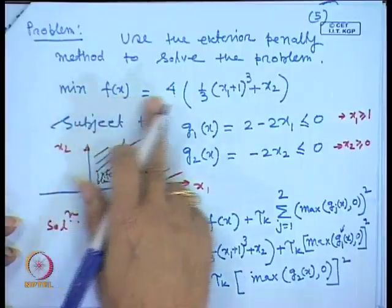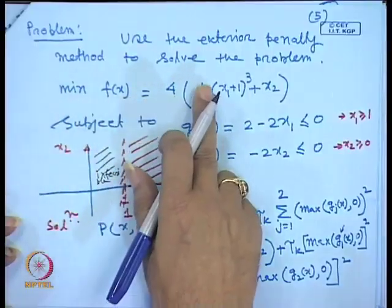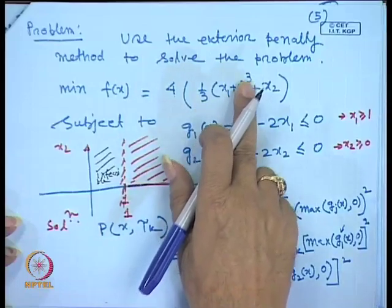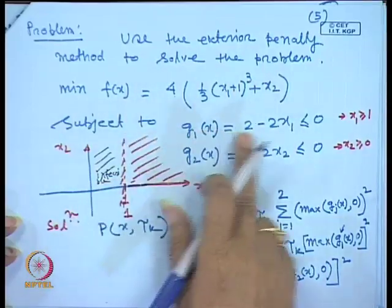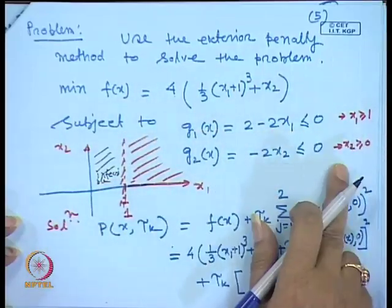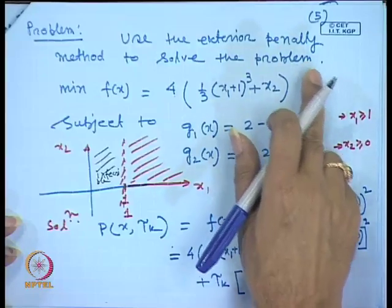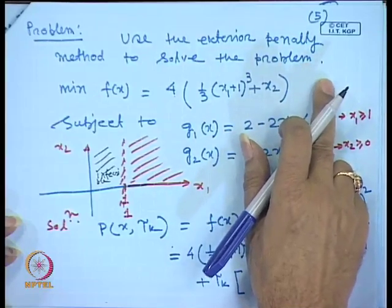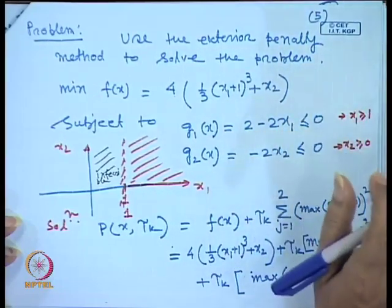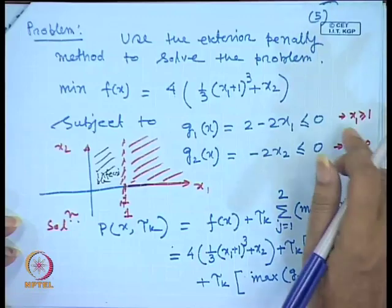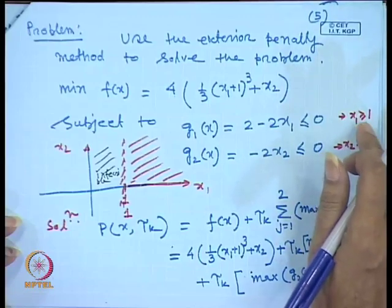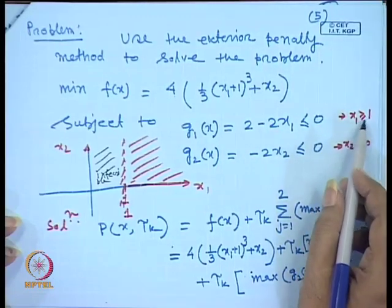Last class we took one example for a non-linear programming problem: f(x) = 4(1/3 x₁ + 1)³ + x₂, subject to constraints. We had to solve this problem using the exterior penalty function method. We saw that x₁ ≥ 1 and x₂ ≥ 0 define the feasible region.